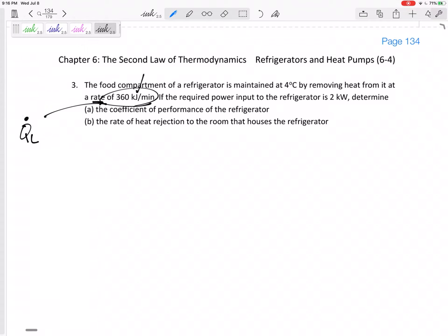And it's a rate, it's not just kilojoules, kilojoules per minute, so that's a Q_L dot. If the required input to the refrigerator is 2 kilowatts, that's W_in or W net in. Determine the coefficient of performance of the refrigerator and the rate of heat rejection to the room. So we want to find COP subscript R and we want to find the rate of heat rejection to the room, that's Q_H dot.